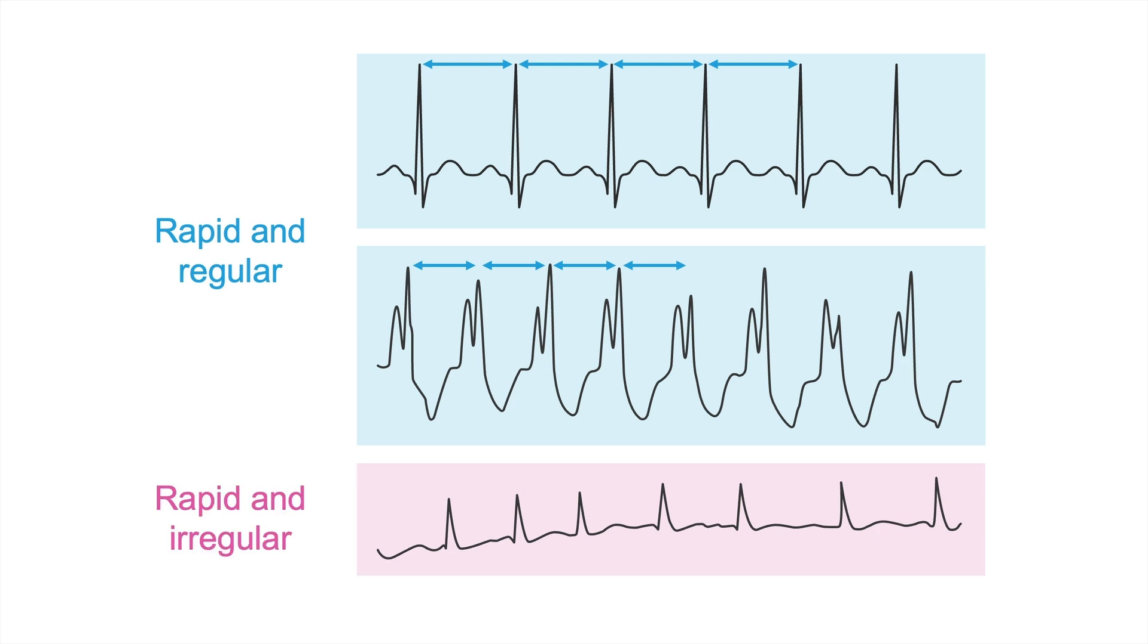You see that the distances between the QRS complexes varies. So this is different than this one, this one, and this one, and this one. So really no two distances are the same. We'll deal with rapid and irregular tachycardias a little later, so let's forget about them for now.